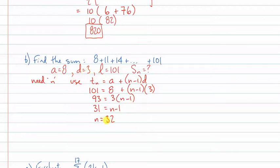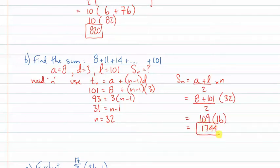So now that I have A, D, N, L, and I want S, I can use most any formula I want. Let's try using that other formula. A plus L over 2 times n. Let's see how this one works. There's my first term, 8. There's my last term, 101. Divide by 2, multiply by the known number of terms of 32. That's going to be 109 over 2 times 32. I could do that calculation now. And I'm going to get my calculator and find out what 109 times 16 is. And I get 1744 as my sum of 32 terms.